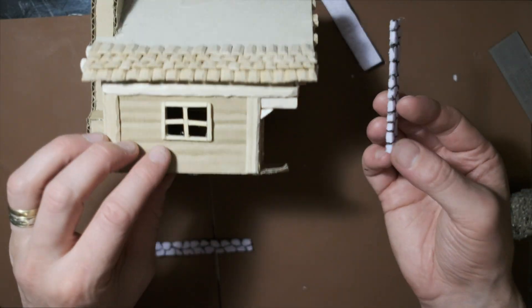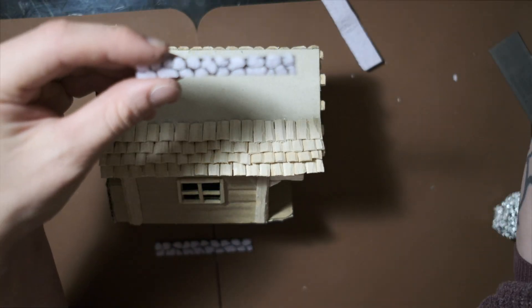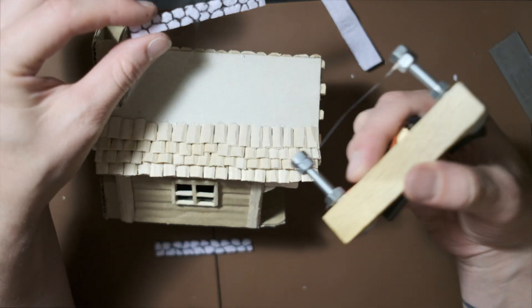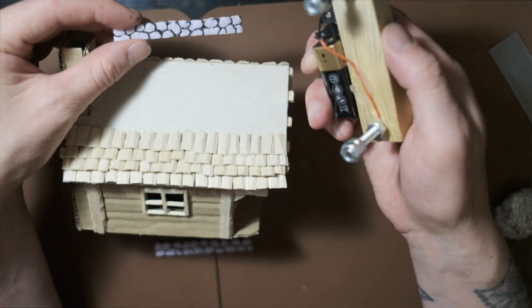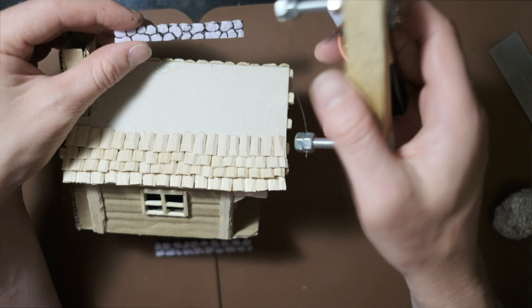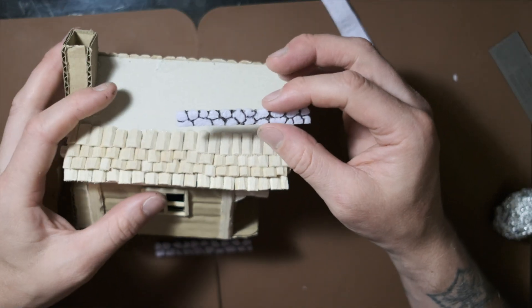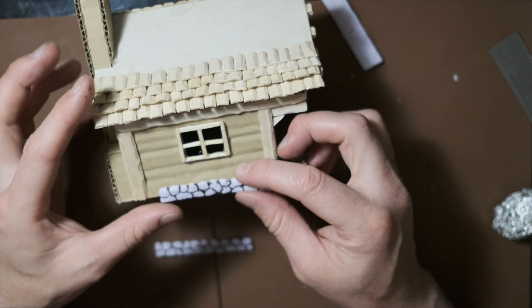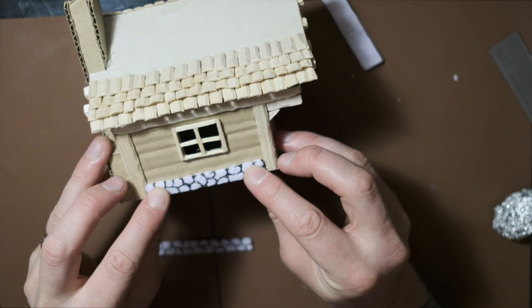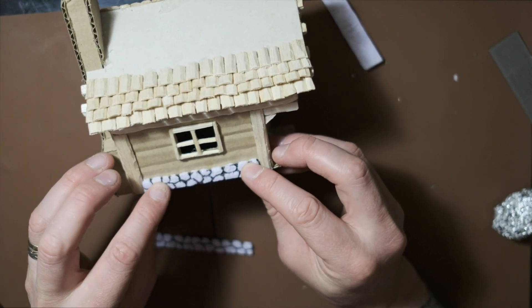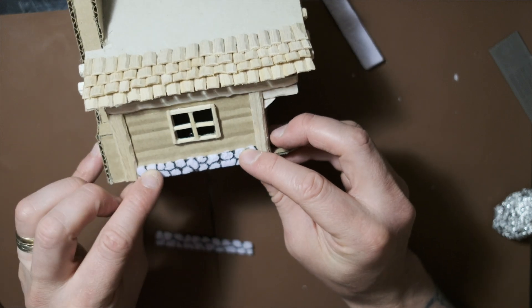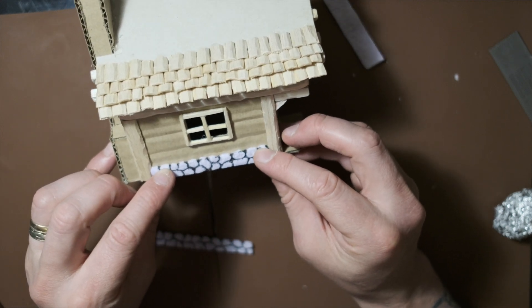I've got some XPS foam and I used my little heat cutter which I made myself to cut some little strips. I've made some little brick sections that I'm going to attach to the bottom like this with some hot glue.